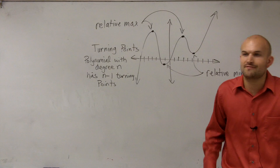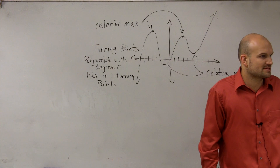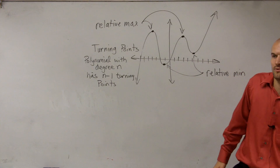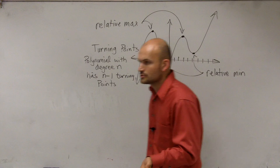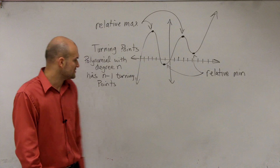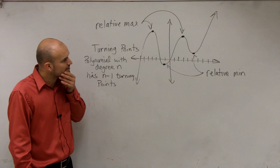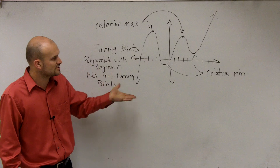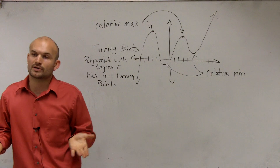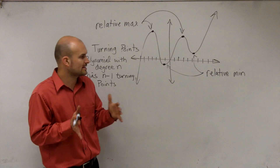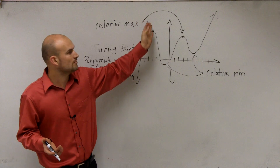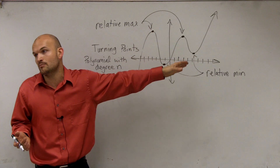So therefore, if I have a polynomial with degree 4, how many turning points is it going to have? 4 minus 1 is 3. If I have a polynomial with degree 2, it's going to have 1 turning point. So when looking at the minimal degree of this polynomial, we're going to: first, estimate our turning points and determine if they are a relative min or a relative max.